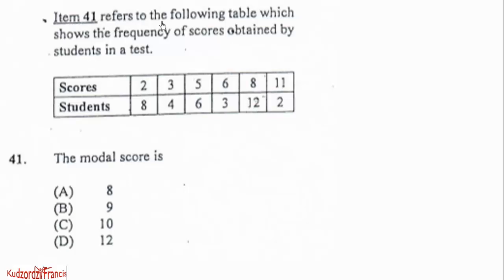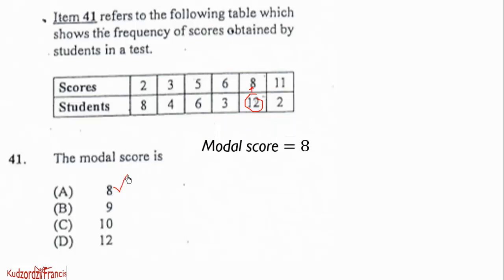Item 41 refers to a table showing the frequency of scores obtained by students in a test. The model score is the score that corresponds to the highest number of students. We can see that the highest number of students is 12, and it corresponds to a specific score, so that is the model score.